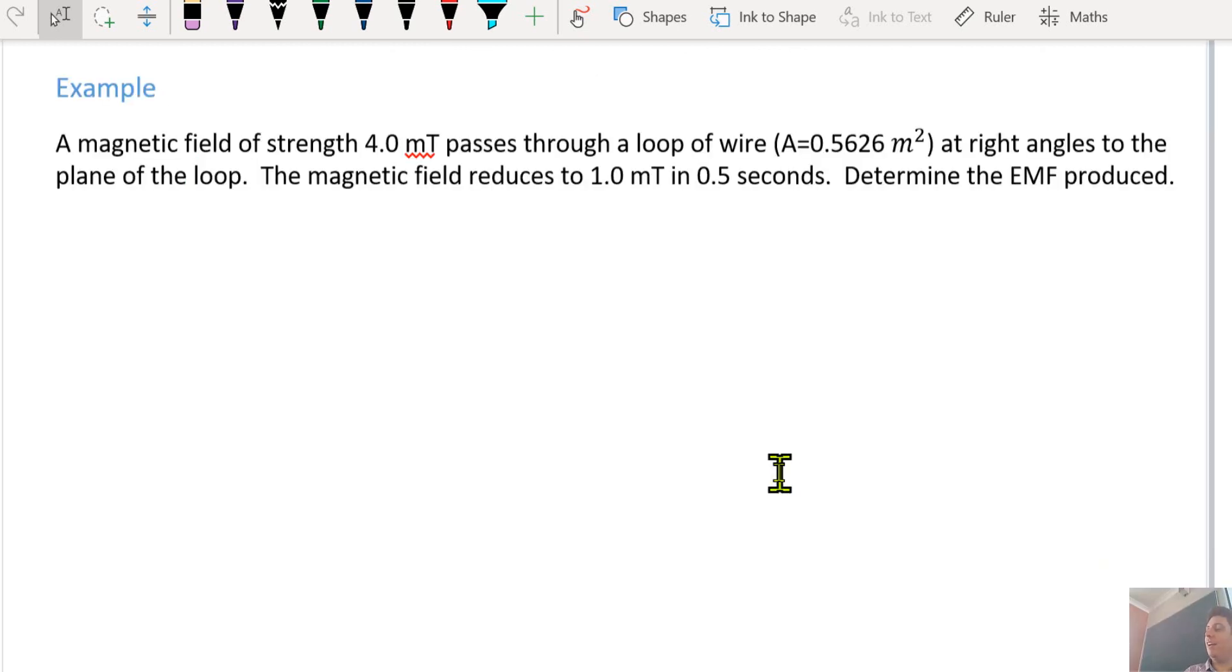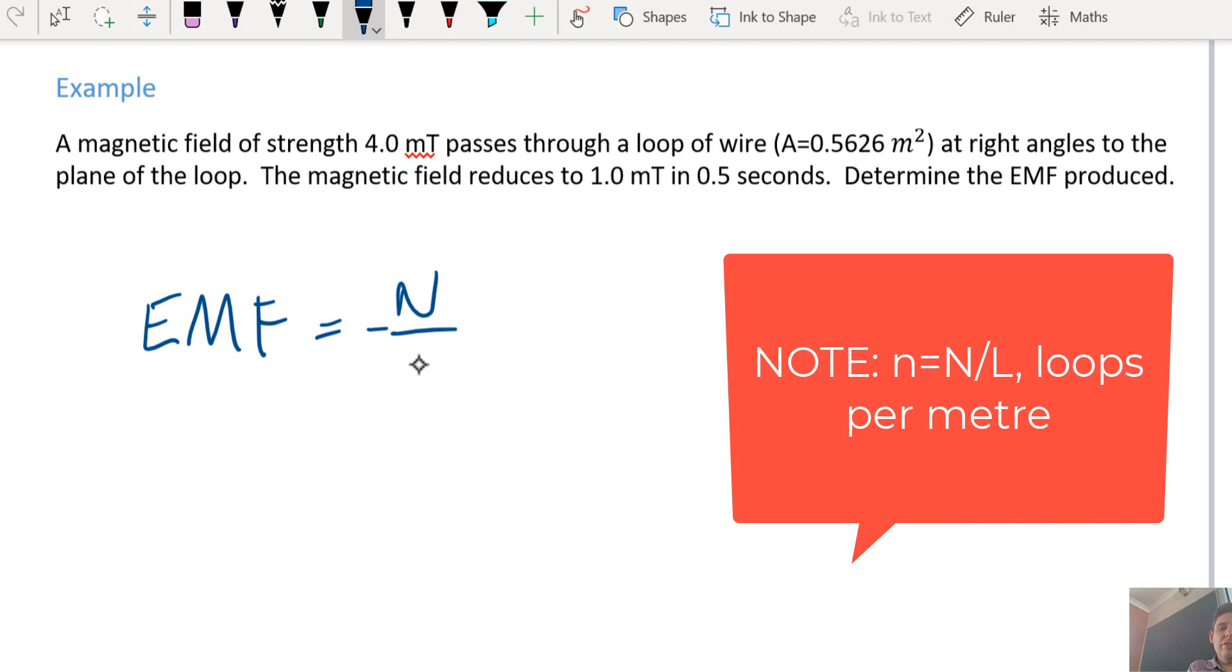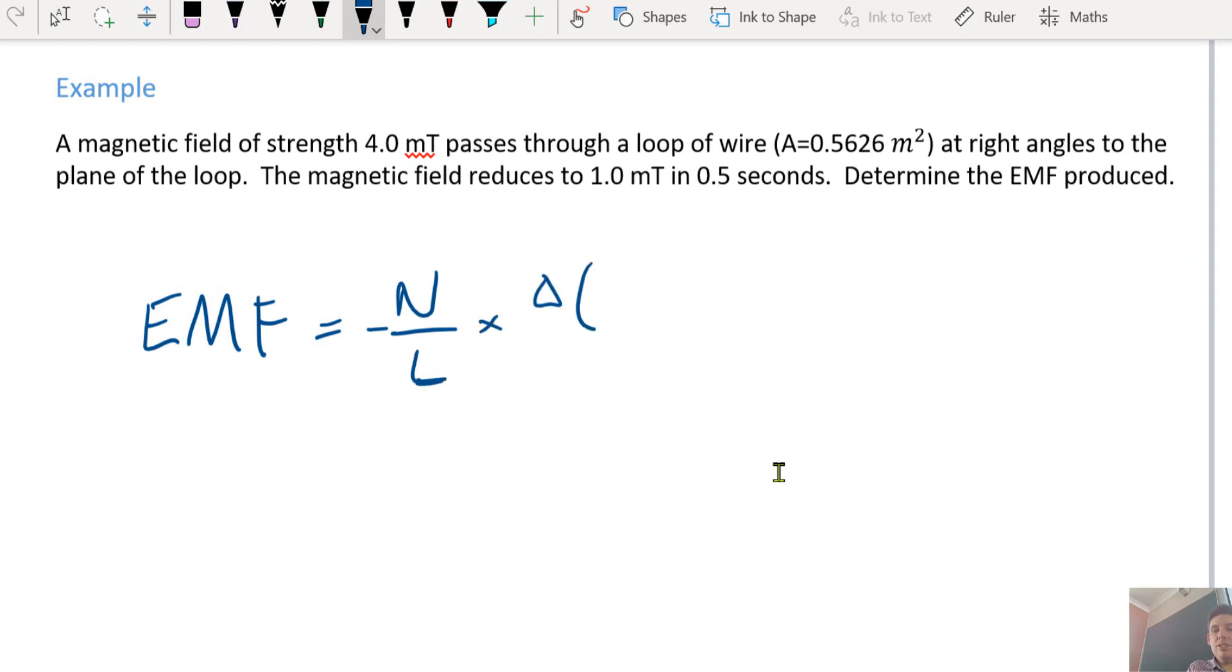Write down what formula? EMF equals negative N over L times change in B, A, because it's right angle, change in t.